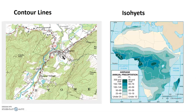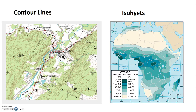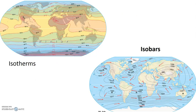Contour lines connect points of equal elevation. Isohyets connect points of equal precipitation. Isotherms connect points of equal temperature. And isobars connect points of equal pressure.